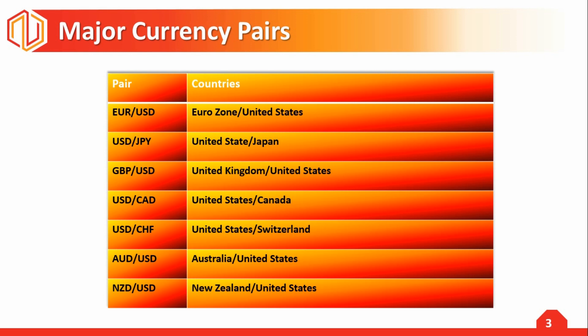Now let's understand major currency pairs. All major currency pairs contain the US dollar on one side, either on the base side or on the quote side. That does not mean that every currency pair with a dollar is a major currency pair — it is just that all major currency pairs have the dollar on either side. These currency pairs are the most frequently traded pairs in the forex market, which is why they are called the majors. The majors generally have the lowest spread and are the most liquid.